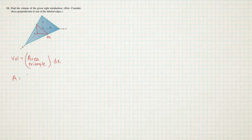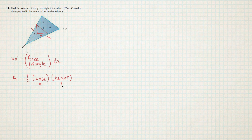What I need to figure out is what the area of that triangle is. The area is going to be one half the base times the height — that right there is the base and that right there is the height. So if I can come up with formulas for the base and the height in terms of X, I'll just need to integrate to set it up.